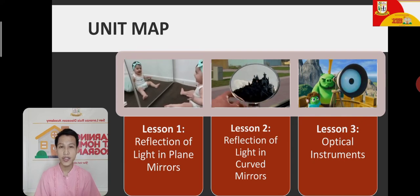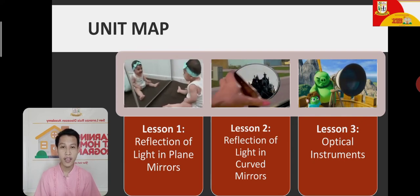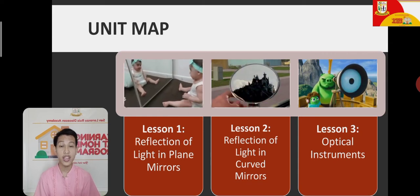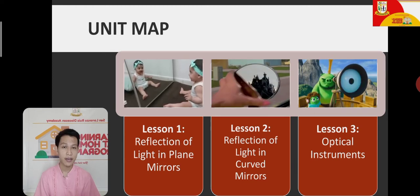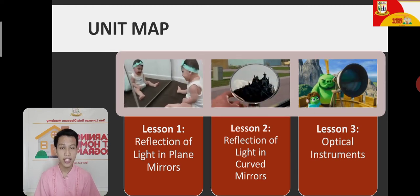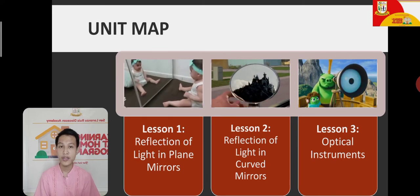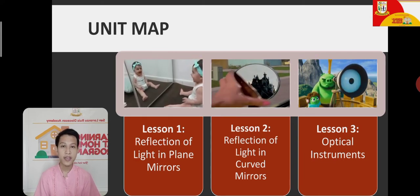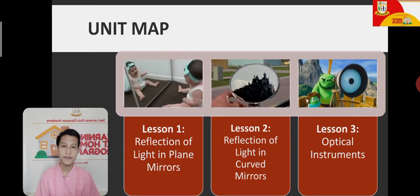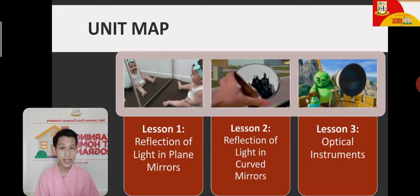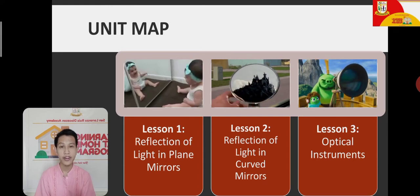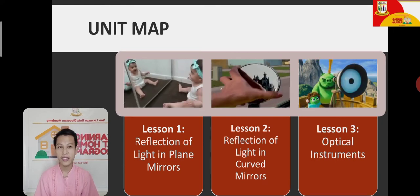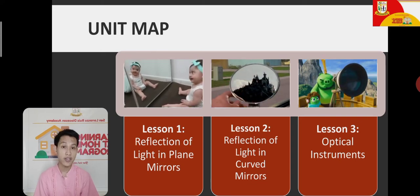For concave mirrors, there are different characteristics of images formed depending on the location of the object from the mirror. It can be virtual or real, upright or inverted, and it can be smaller, bigger, or the same size as the object. Examples of concave mirrors are the mirrors used by the dentist, and also when you place your spoon in front of you on the curved side — that is also a concave mirror. So that's it for our lesson number 2.